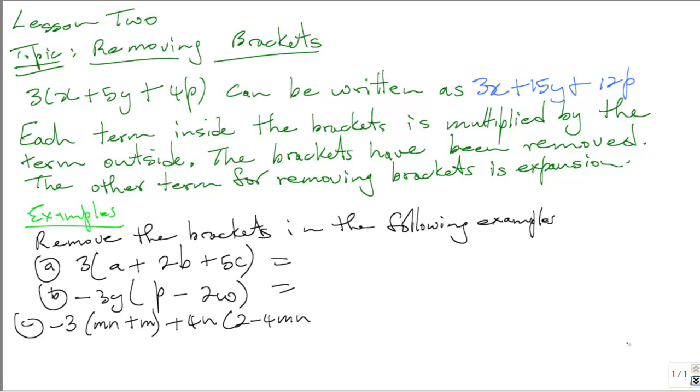We are going to do the following examples. Remove the brackets in the following examples. The first one is 3 times a plus 2b plus 5c. We multiply the 3 by a, that's 3a. We multiply the 3 by 2b and that is 6b. And the 3 by 5c, that is 15c. So the answer is 3a plus 6b plus 15c.